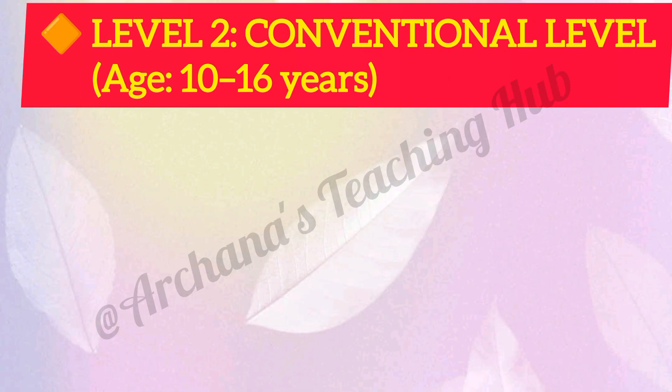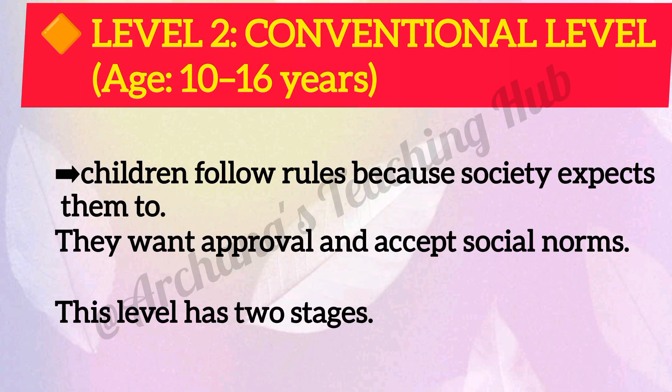Level 2: Conventional level. Age 10 to 16 years. At this level, children follow rules because society expects them to. They want approval and accept social norms. This level has two stages.